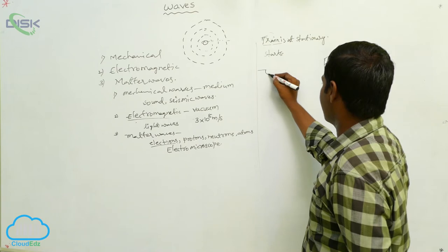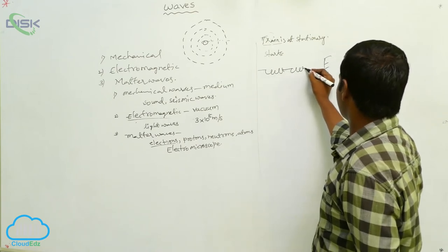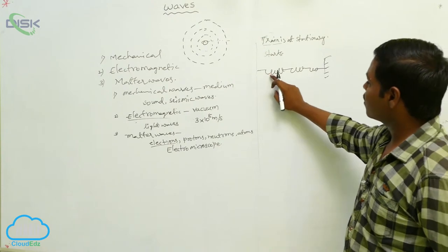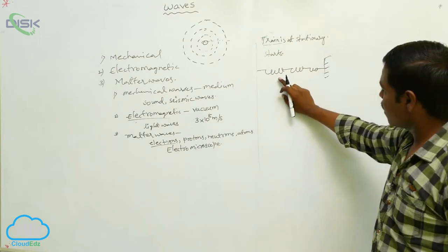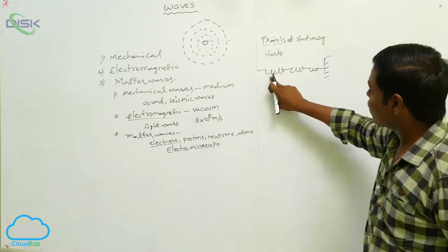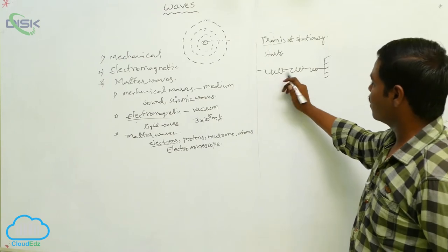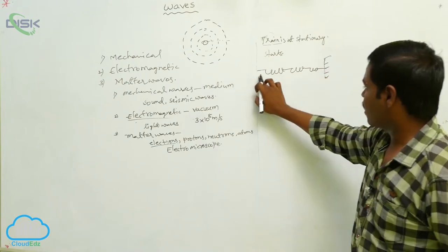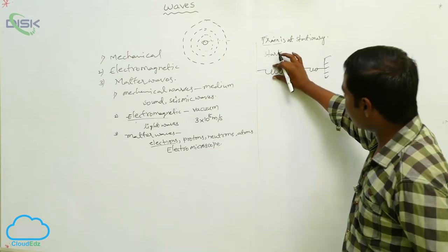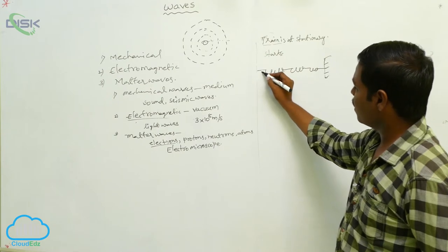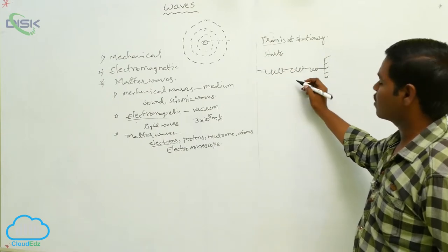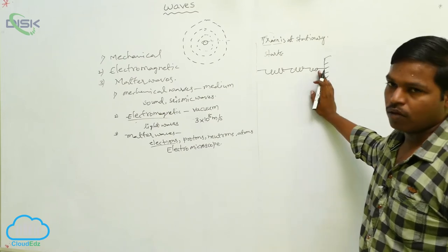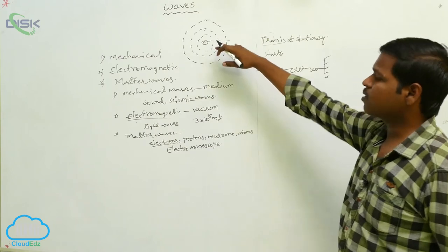Taking a spring system — if we pull this spring and release it, the spring makes oscillations. When the spring makes oscillations, the disturbance in the spring travels from the mean position. The spring as a whole does not move; only one component moves first, then the next component, then the next, and so on. The components of the spring move from one place to another place. This is the explanation for waves.